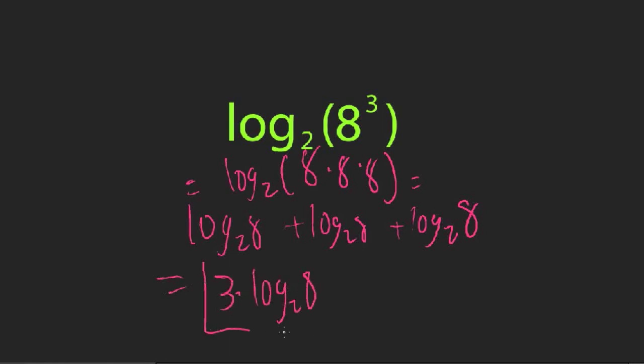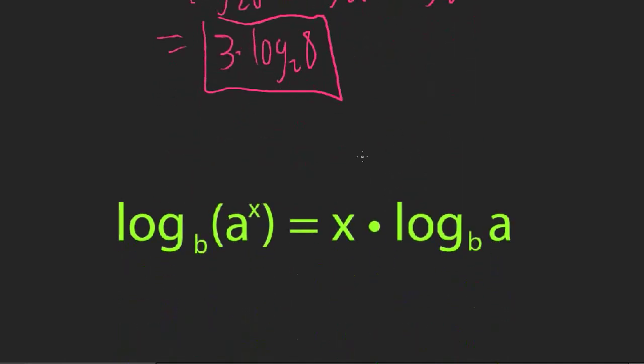So you can see that that's just 3 times log base 2 of 8. And appreciate how similar this is to what we started. The only difference is we've taken this exponent on the 8 and moved it down in front here. And you can always do that. So that's your next rule, which is that log base b of a to the x equals x times log base b of a. So you can move this exponent down in front of the logarithm.